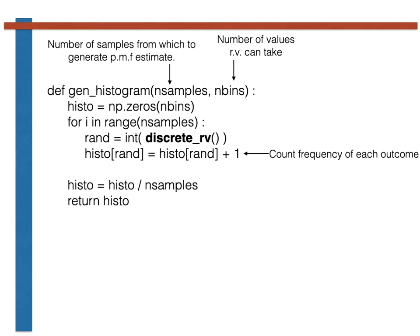Once we have generated all our random variables, we then normalize the estimate for the probability mass function that is stored in the array called histo, as shown here. It is this numpy array containing the estimates for each element of the probability mass function that is then returned from our function. In other words, we return an array of values here rather than a single number.